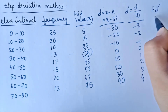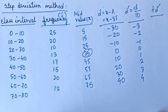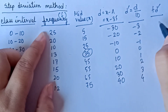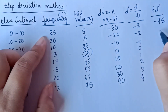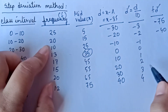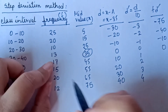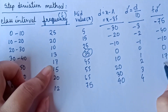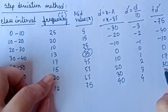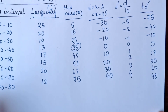After that, we need to find F D dash — F means the frequency value. So: 25 into minus 3 equals minus 75, 20 into minus 2 equals minus 40, 10 into minus 1 equals minus 10, 13 into 0 equals 0, 17 into 1 equals 17, 15 into 2 equals 30, 20 into 3 equals 60, 12 into 4 equals 48. We have got all these values.